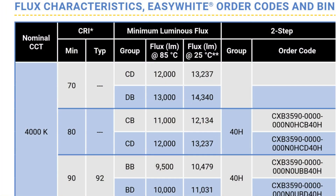This is an enlargement of a section of the data sheet we looked at earlier — this is the 4000 degree Kelvin section. Let's take a look at the luminous flux of some of the LEDs. Here we've got one that puts out 13,000 lumens, one that puts out 12,000 lumens, and one that puts out 10,000 lumens. Which of those do you think is actually putting out the most light? The answer is they're all putting out the same amount of light. And which one would be best for growing plants? Most people would pick the 13,000 lumen one, but it's actually the 10,000 lumen one. To understand how this can be possible, you have to understand exactly what lumens are.